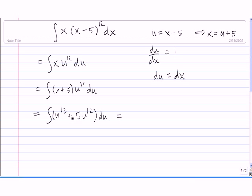And so now we can integrate this. u to the 13th, when we integrate it, we get u to the 14th over 14 plus 5 times the integral of u to the 12th.